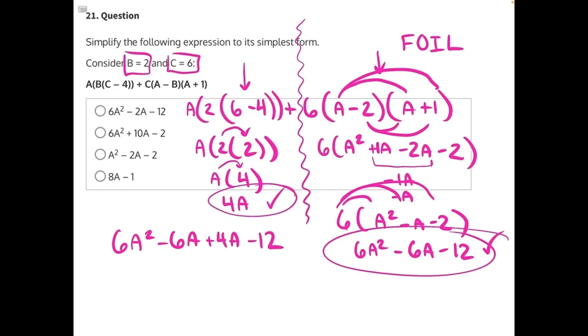And so our last step is to combine these two like terms. Negative 6A plus 4A would give us a negative 2A. So this is our final result, and that perfectly matches answer choice A, our correct answer.